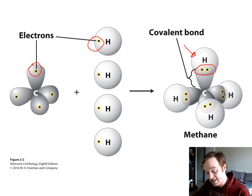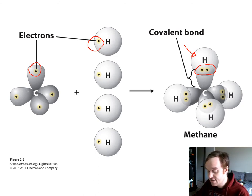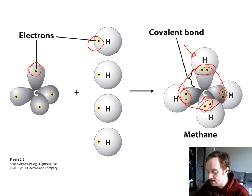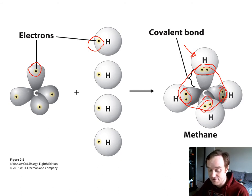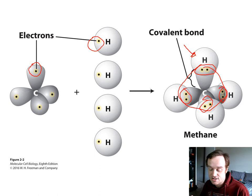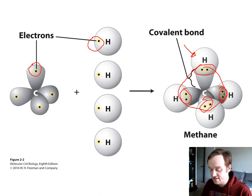In carbon's outer shell, it wants eight electrons, so it will bind with four different hydrogens. Carbon ends up with eight electrons in its outer shell, and each hydrogen will have two in its innermost shell, which is what it needs. By sharing electrons, they've all reached this optimal level of filling their electron shells.